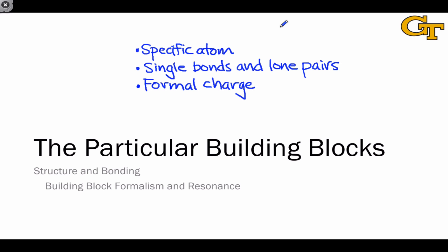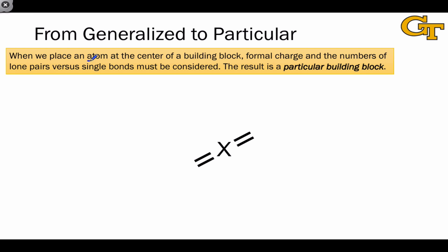You'll often be reasoning in the opposite direction — from a specific structure to its generalized counterpart — but my hope is that by showing you how this works in the generalized-to-particular direction, you'll see how particular structures can be instances of the broader patterns. The resulting structure containing all of these elements is what we refer to as a particular building block, and it's what we looked at in the first video of this series when we talked about structural analogies.